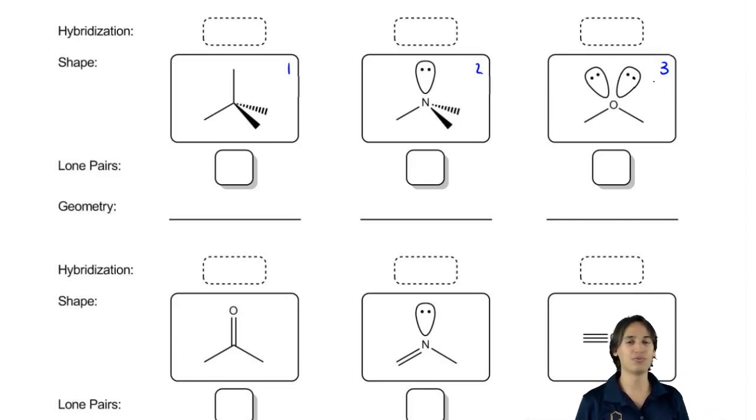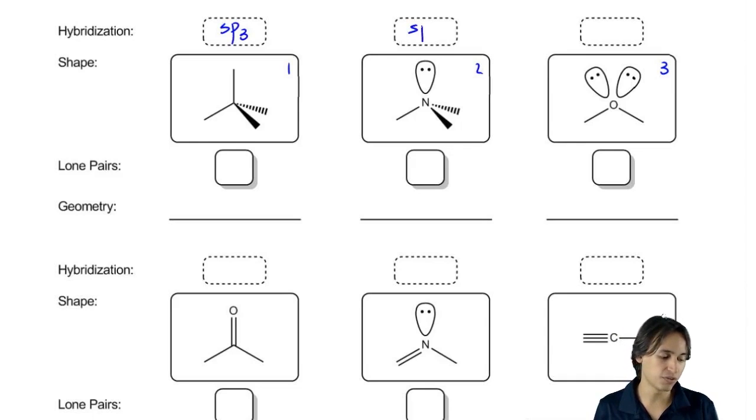So if you were using the rules correctly, what you would have noticed is that these are all sp3. Even though they look very different, they're all sp3 hybridized. And the reason why is because they all have four bond sites. Some of them have four atoms. Some of them have atoms and lone pairs. But that's still four bond sites total.